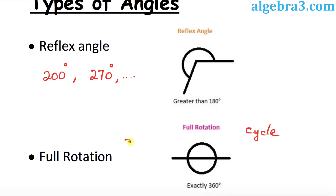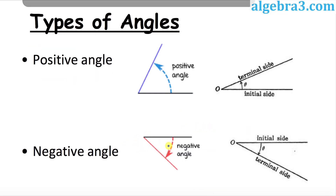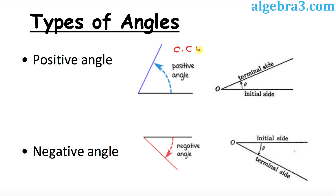Next we're going to talk about positive angles and negative angles. Positive angles are angles measured in the counter-clockwise direction, abbreviated CCW, meaning opposite to the clock direction. Negative angles are measured in the clockwise direction, abbreviated CW.